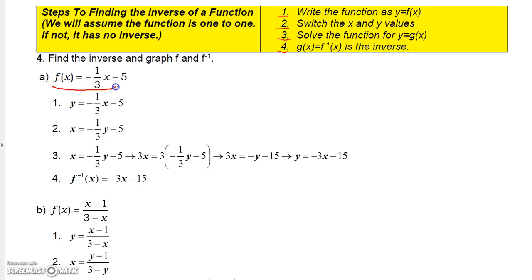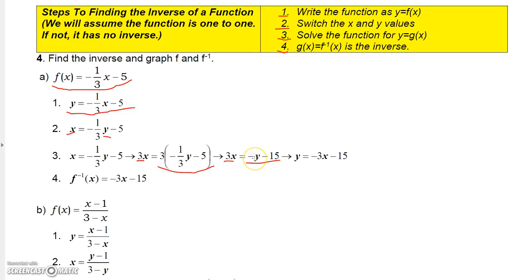Here's f of x equals negative one-third x minus five. Step one: write it as y equals negative one-third x minus five. Then replace y with x and x with y everywhere. Now solve for y: multiply both sides by three to get rid of the denominator, giving three x equals negative y minus fifteen. Solving for y gives y equals negative three x minus fifteen. That is the inverse of the original function — written in inverse notation, not as a reciprocal.